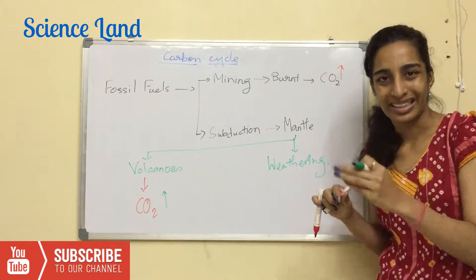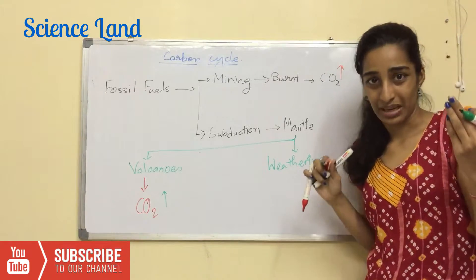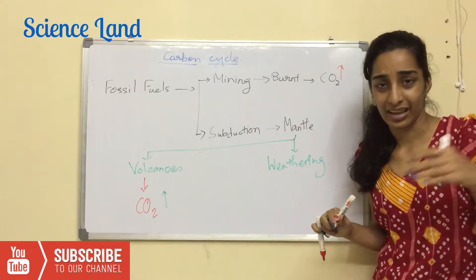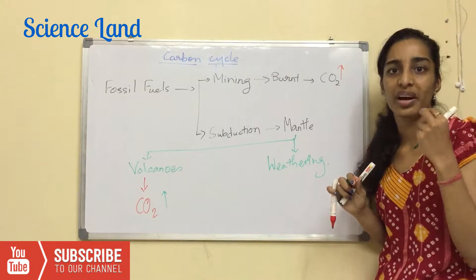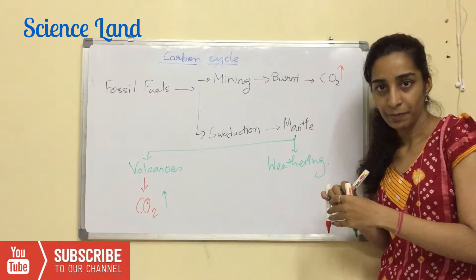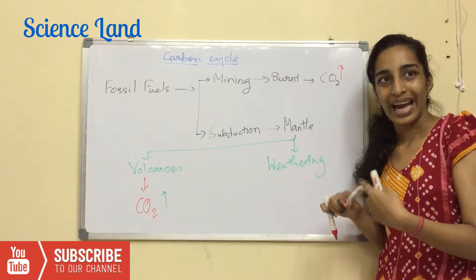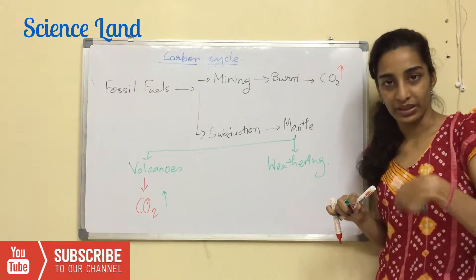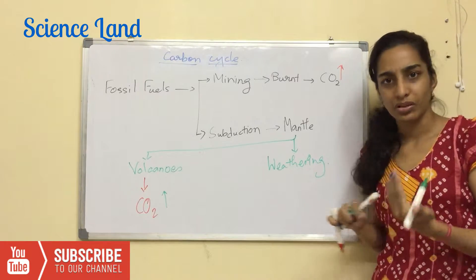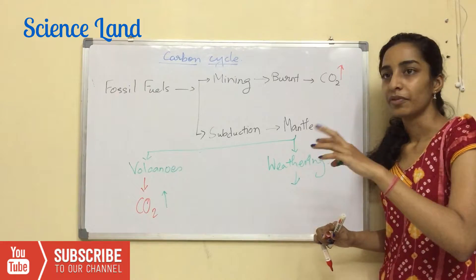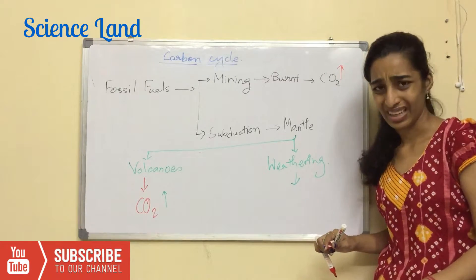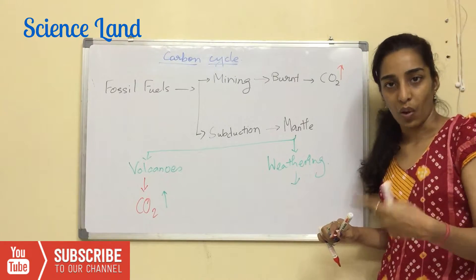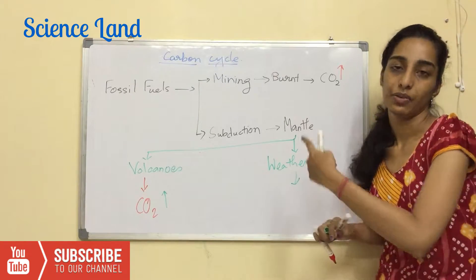The carbon content in the mantle will come up over time. There might be soil erosion, or it might just be normal rainfall — rainwater will carry the dissolved carbon content with it and take it further to the oceans.